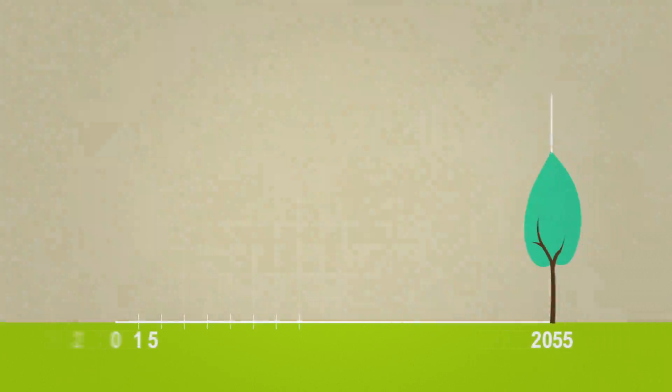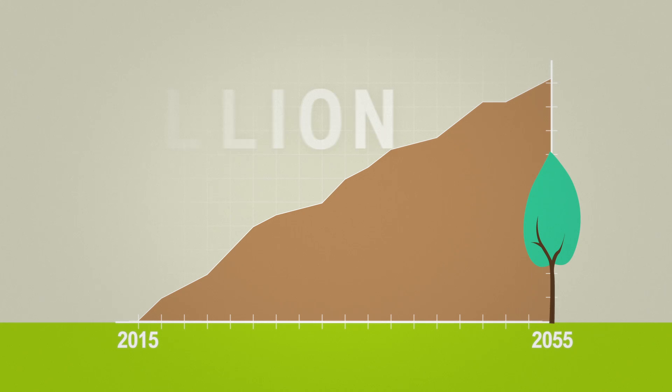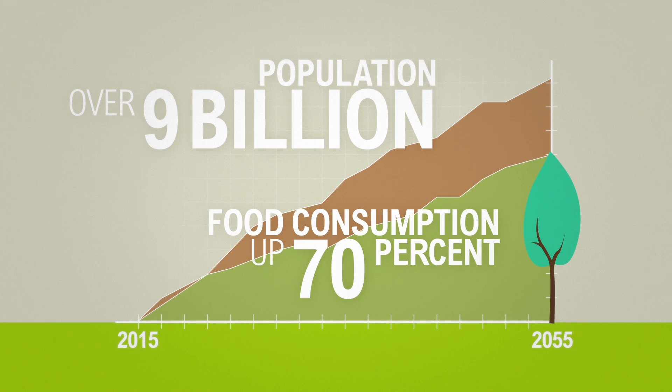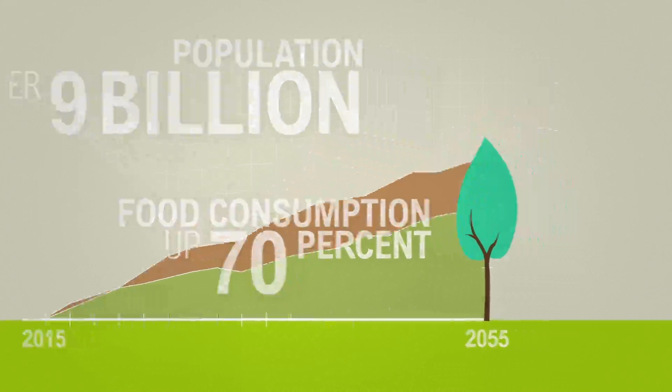Within the next 40 years, the UN projects the earth's population to grow to over 9 billion, and food consumption to increase by 70%. More people eating more food could lead to even more degradation.